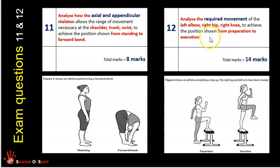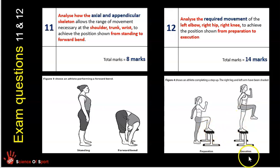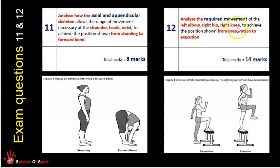It tells you that they want you to look at the preparation to execution phase. So the preparation phase is labelled, and then stepping up on the box with the right knee elevated to a right angle is the execution. So that's the movement — talk about nothing beyond that movement. They've also indicated the specific limbs by shading that they want you to focus on, and in the question they've specified they want the left elbow, the right hip and the right knee.